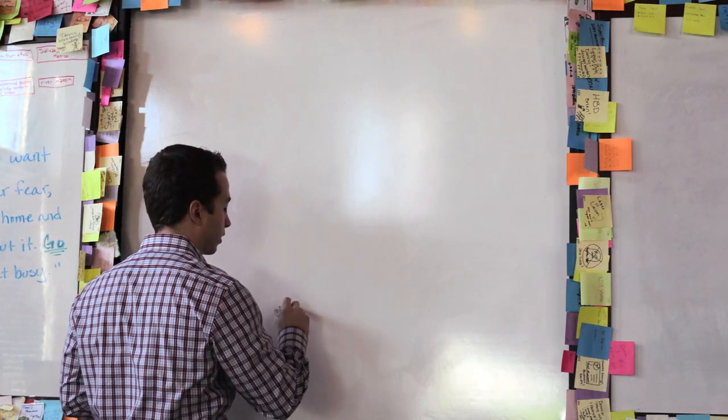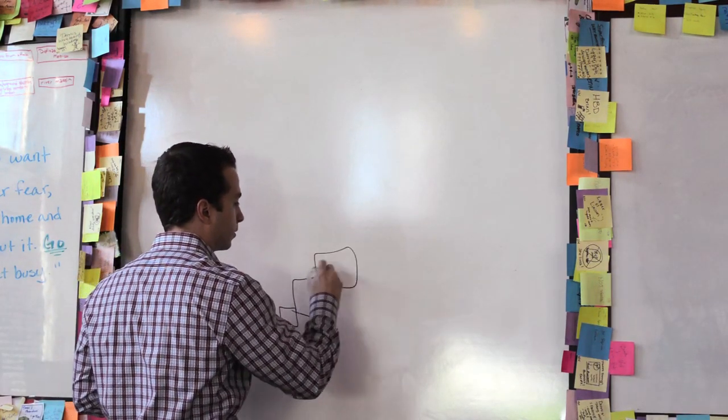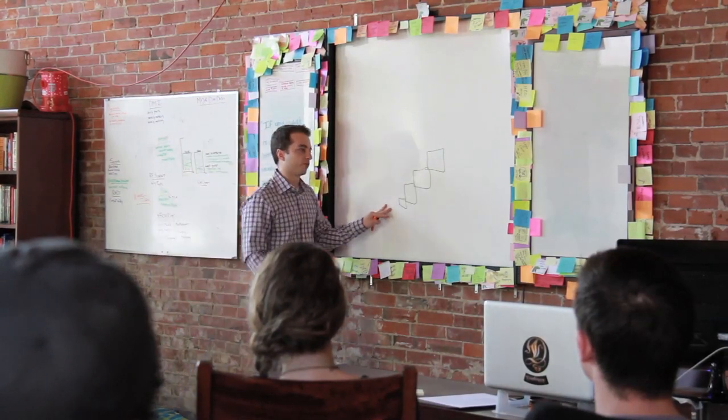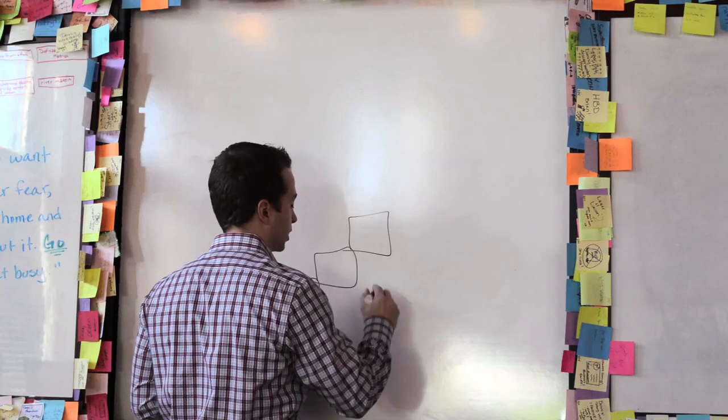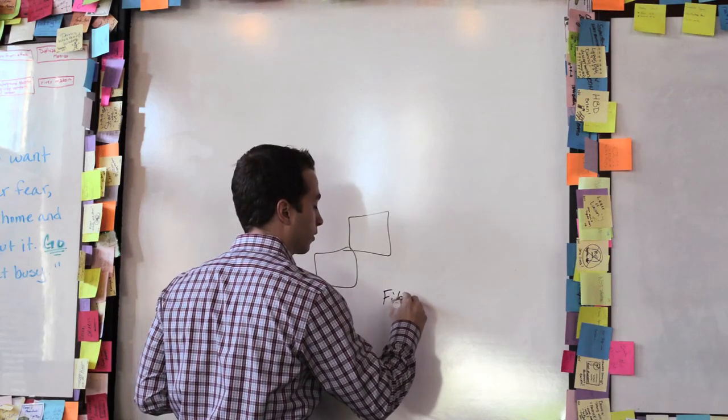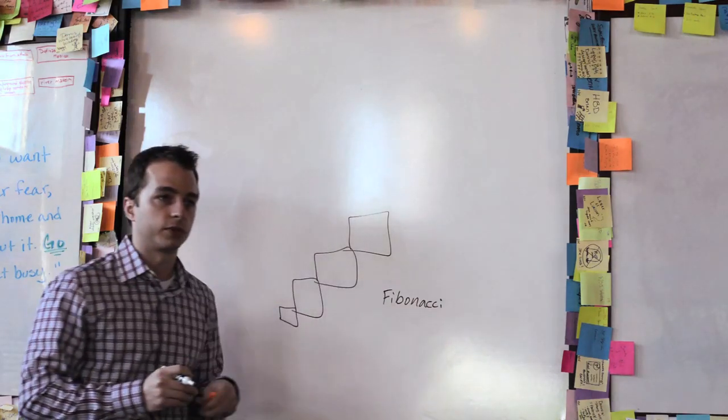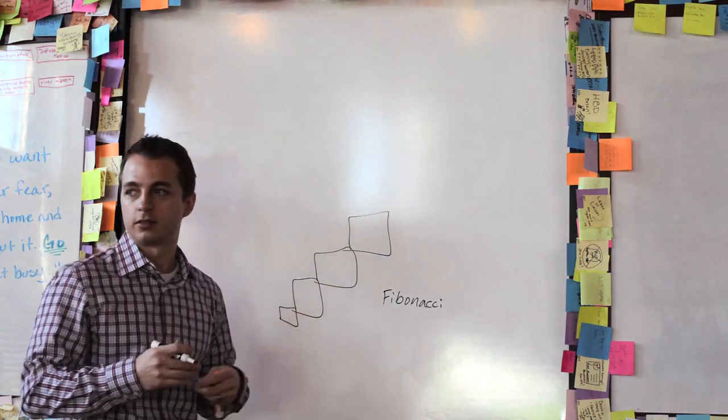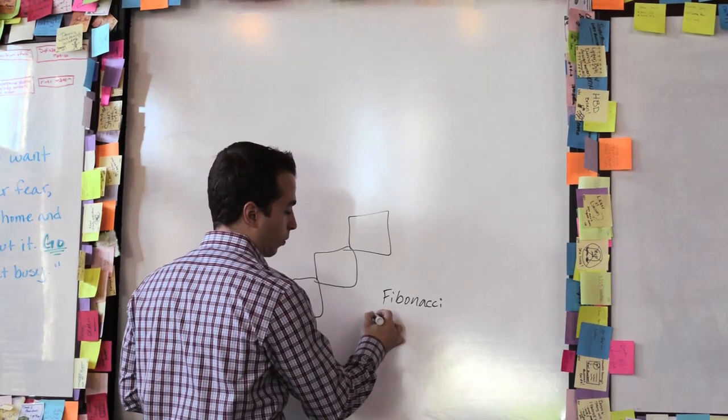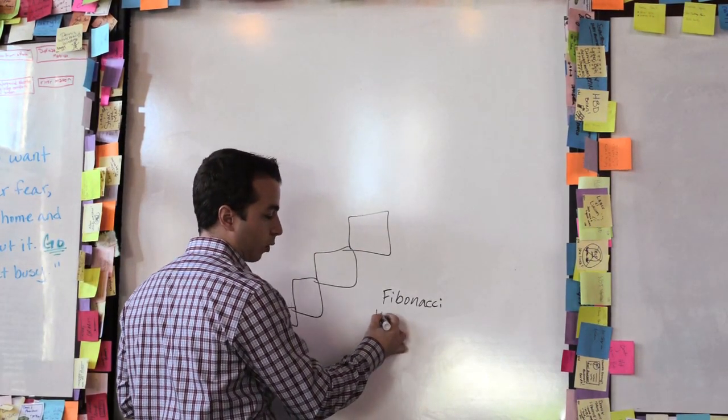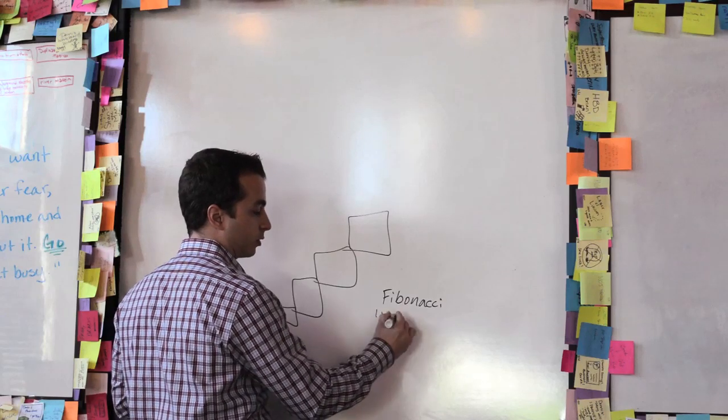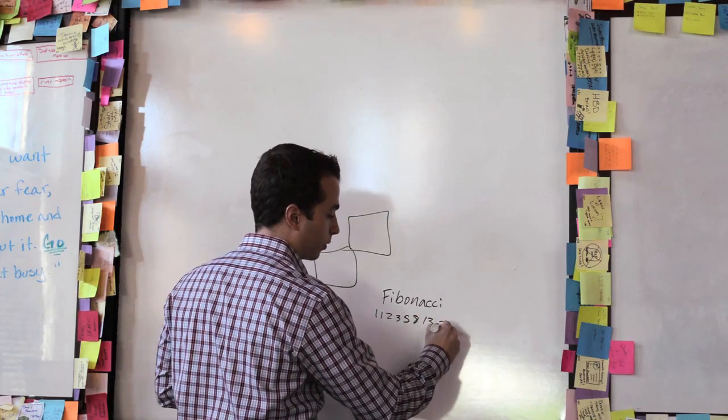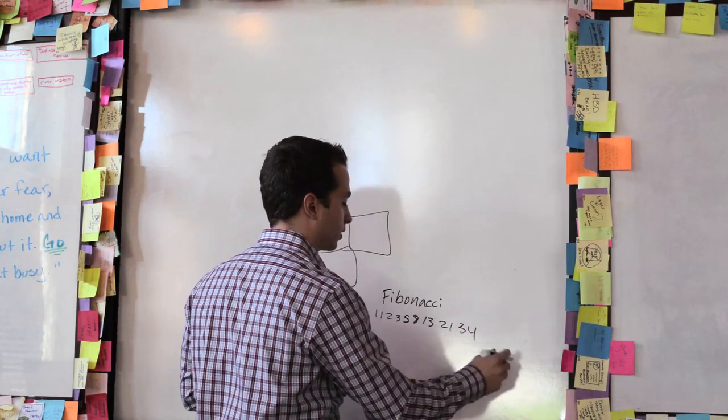It was structured like this, and really where the original kernel of this idea came from is from the size perspective, something called the Fibonacci number, sometimes referred to as the golden ratio. Does anybody know what the Fibonacci number is? It's the ratio where one plus one equals two, one plus two is three, two plus three is five, eight, thirteen, twenty-one, thirty-four, et cetera.